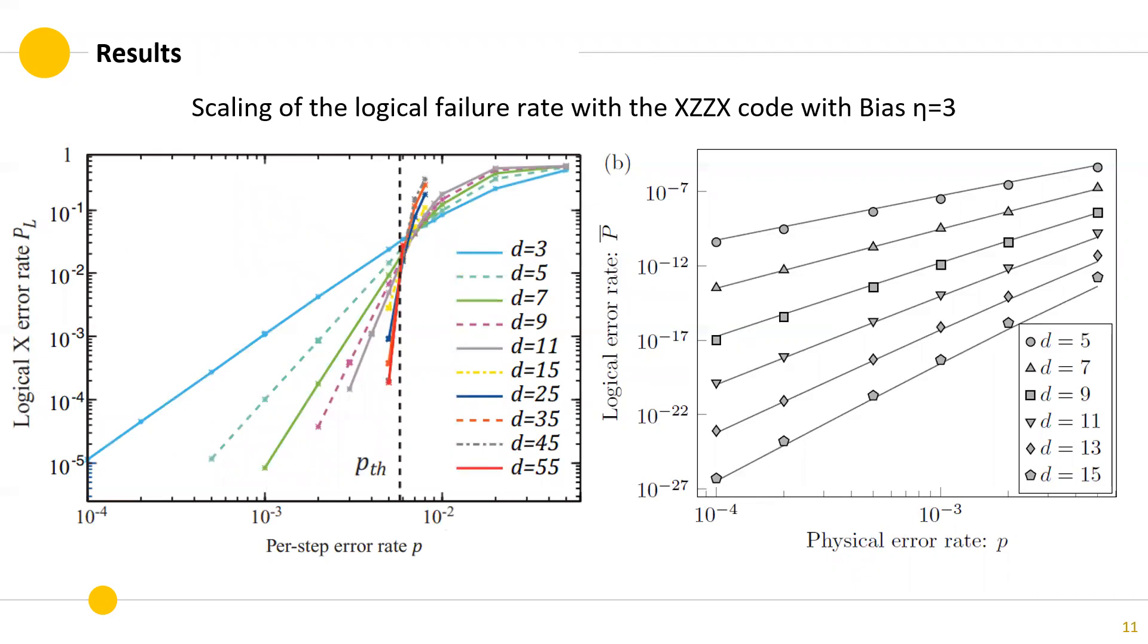We can also compare between the CSS surface code and the XZX surface code. We see that just by considering bias noise, the XZX surface code provides orders of magnitude improvement over the CSS surface code.